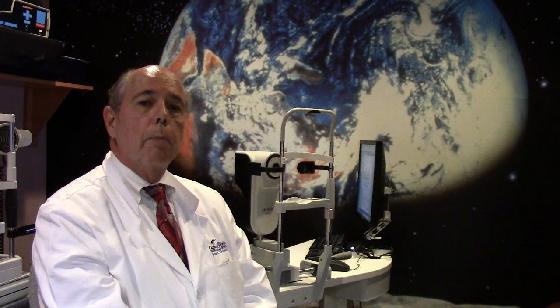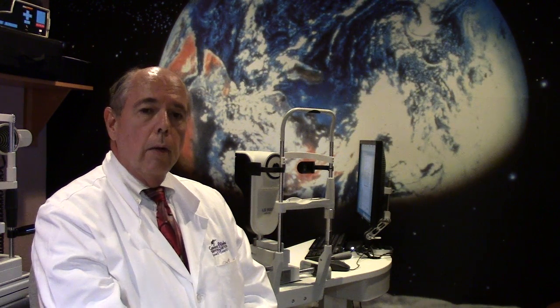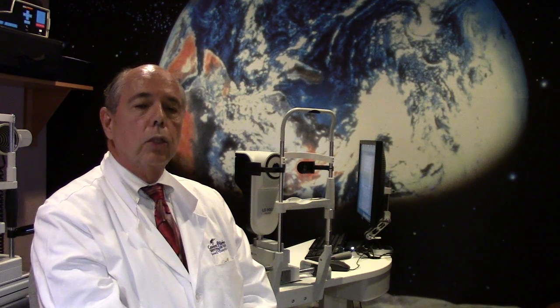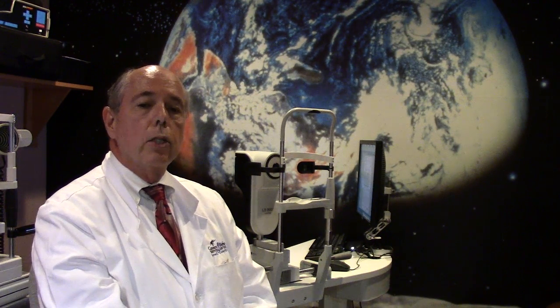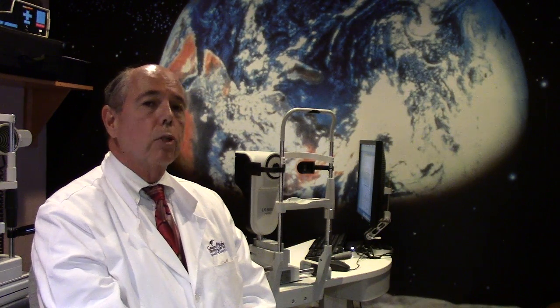So with this type of lens which we call a toric intraocular lens, we were able to correct her astigmatism. And it's just recently that we had a lens that would be strong enough to correct six diopters of astigmatism.